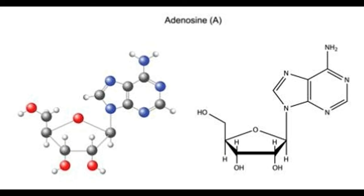The major differentiating factor between these two molecules is the fact that adenine is the basic nucleobase, which when bonded to a pentose sugar like ribose yields adenosine, which is a nucleoside. In other words, adenosine is a complex molecule where adenine is one of the components. Hence adenosine is a bigger molecule and is functionally more active.